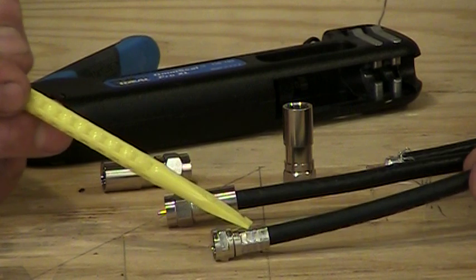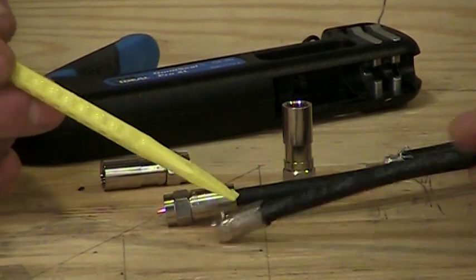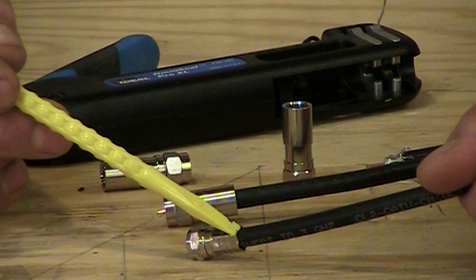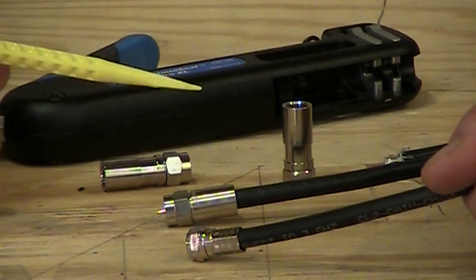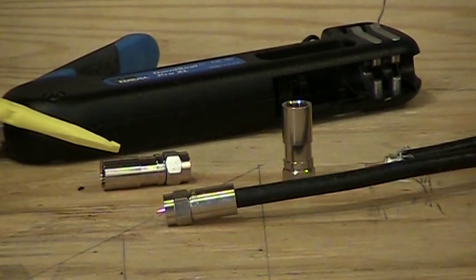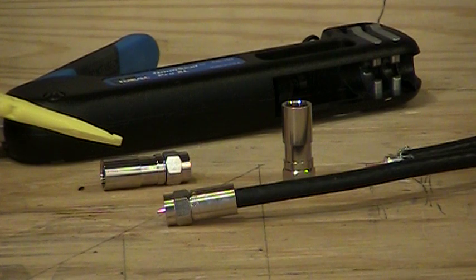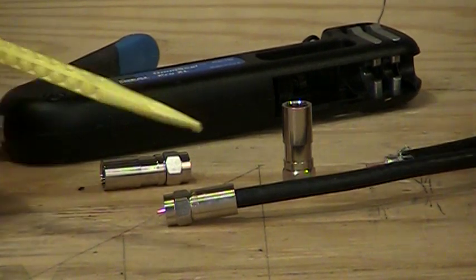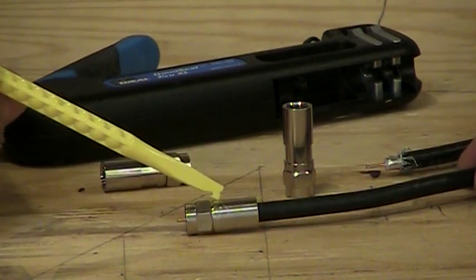And the other problem with the old F connector, or the crimp-on here, is the back end of the connector, because it is not sealed in any form, can radiate energy coming in and out of it. And the FCC actually mandates to the cable companies that their connector cannot leak too much energy into the air. And that's another reason why we've gone to the compression.